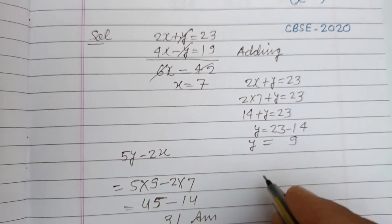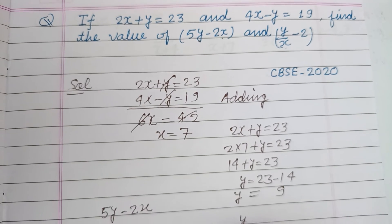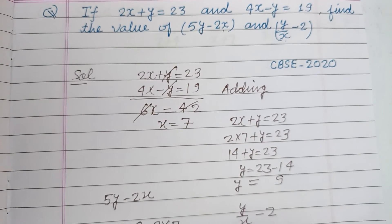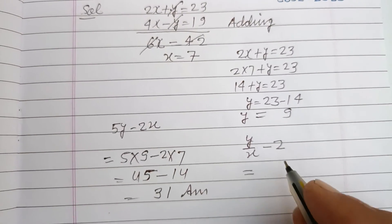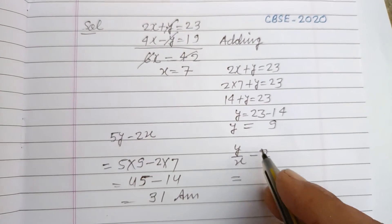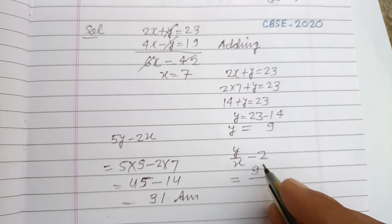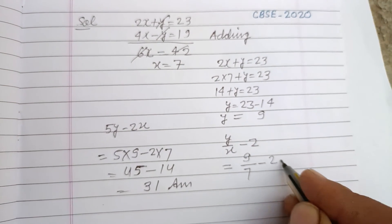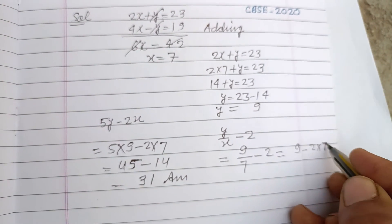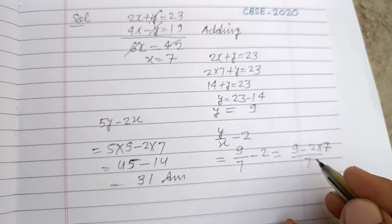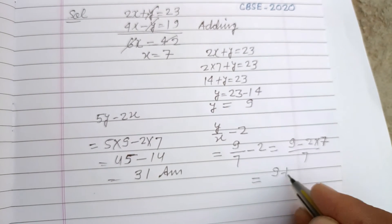The question also asks for the value of y/x - 2. So y is 9 over x which is 7, minus 2. Therefore 9/7 - 2 equals (9 - 2 times 7)/7, which is (9 - 14)/7 = -5/7.